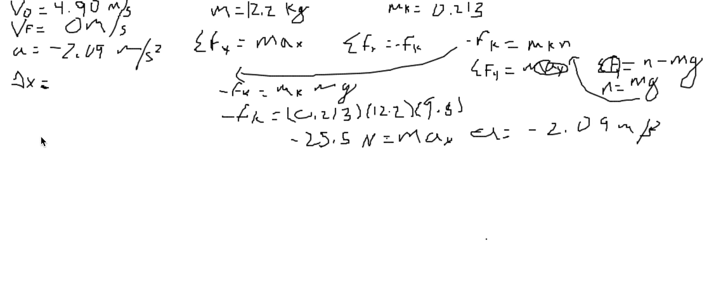So, we can use the equation vf squared minus v0 squared is equal to 2 times the acceleration times delta x. And we have to solve for delta x. So, this is 0.